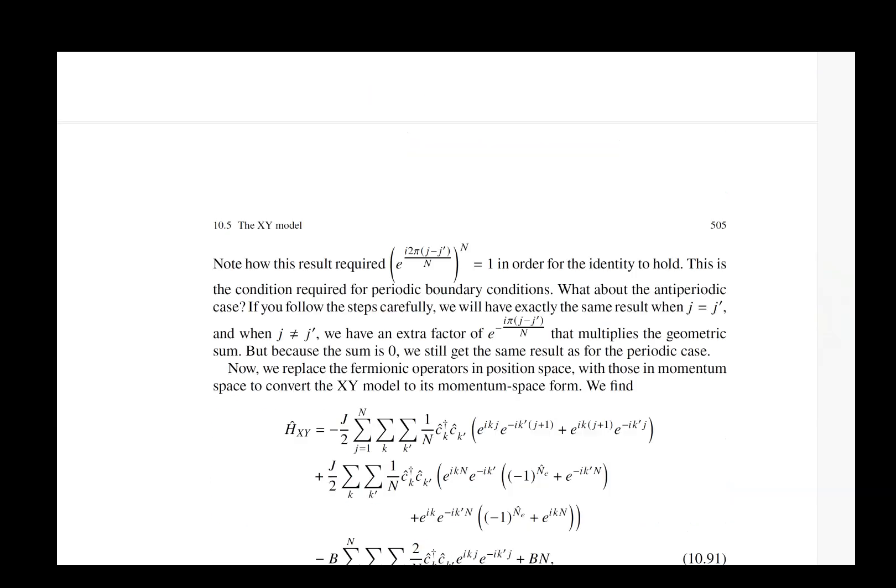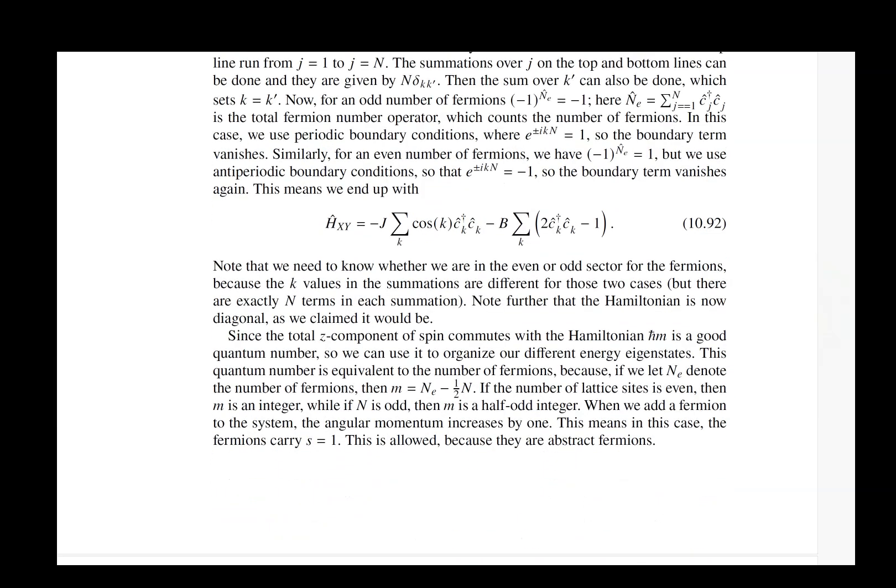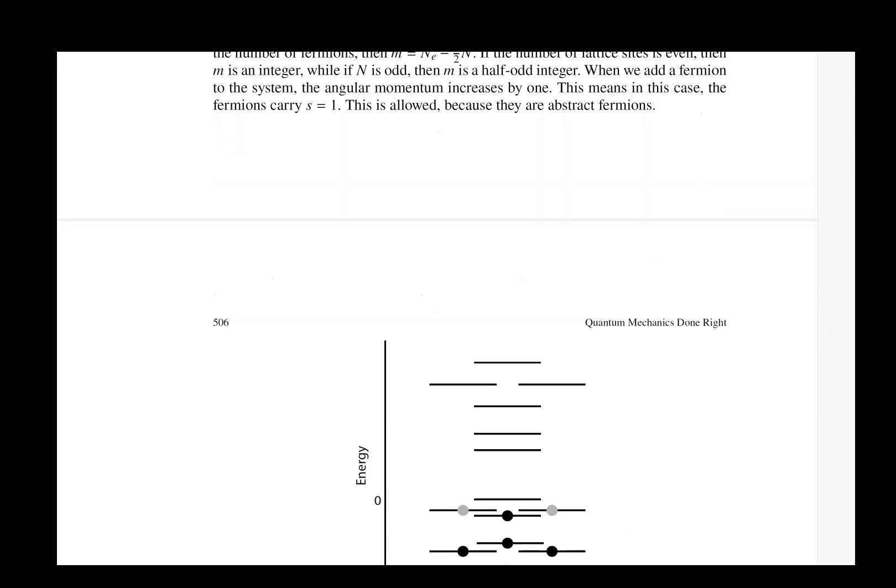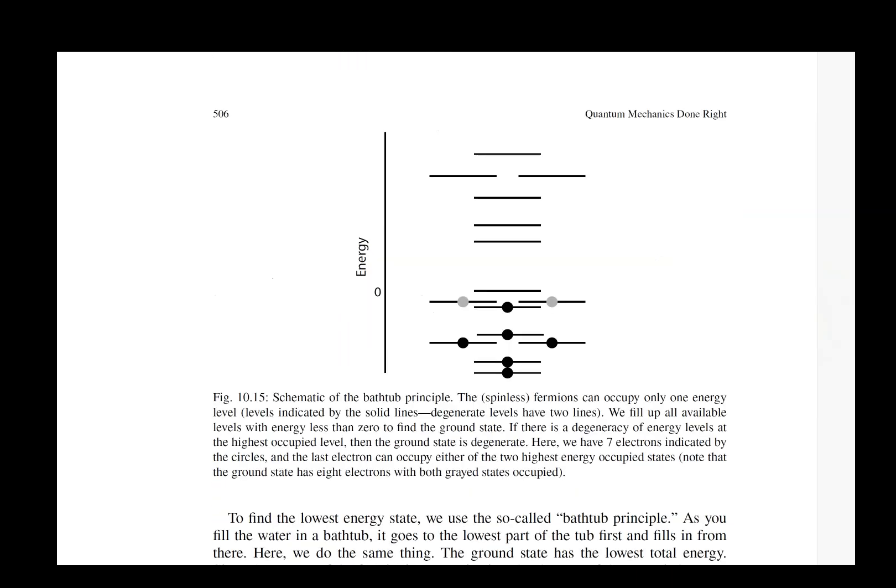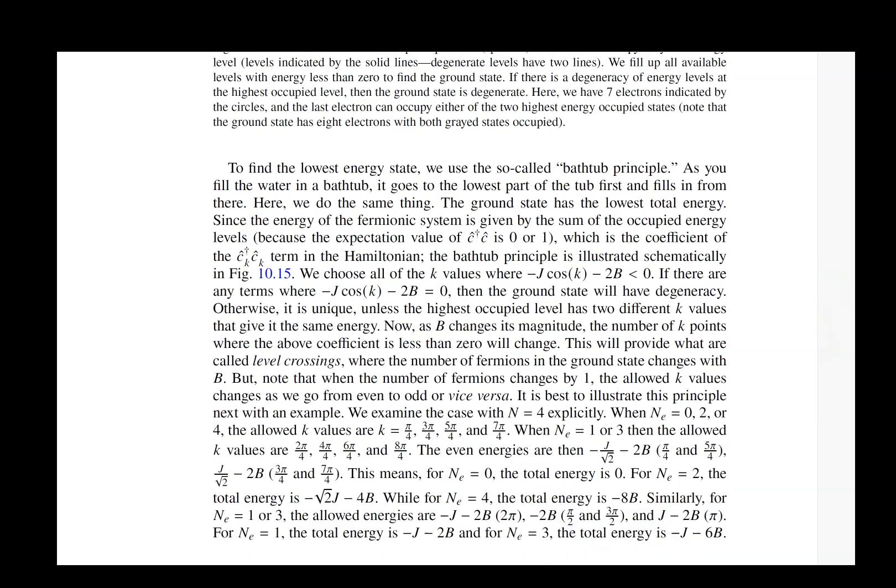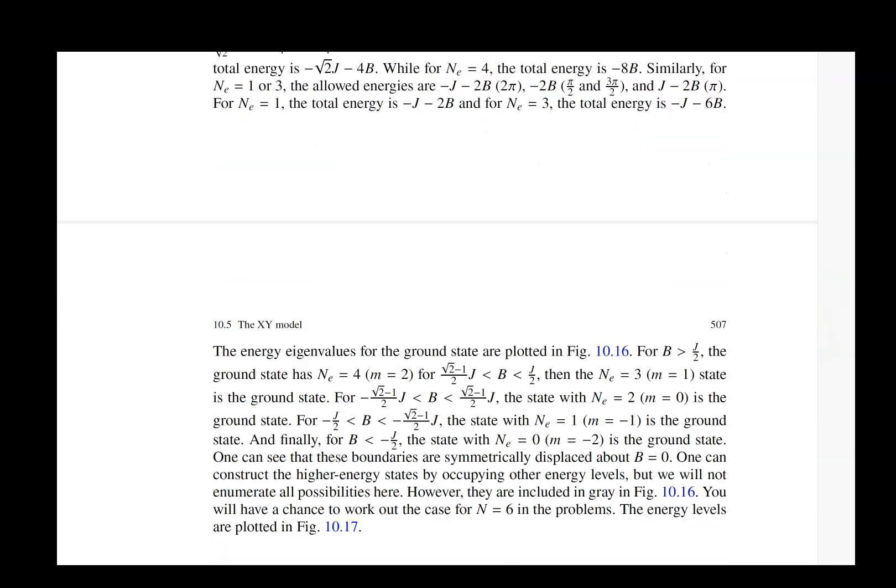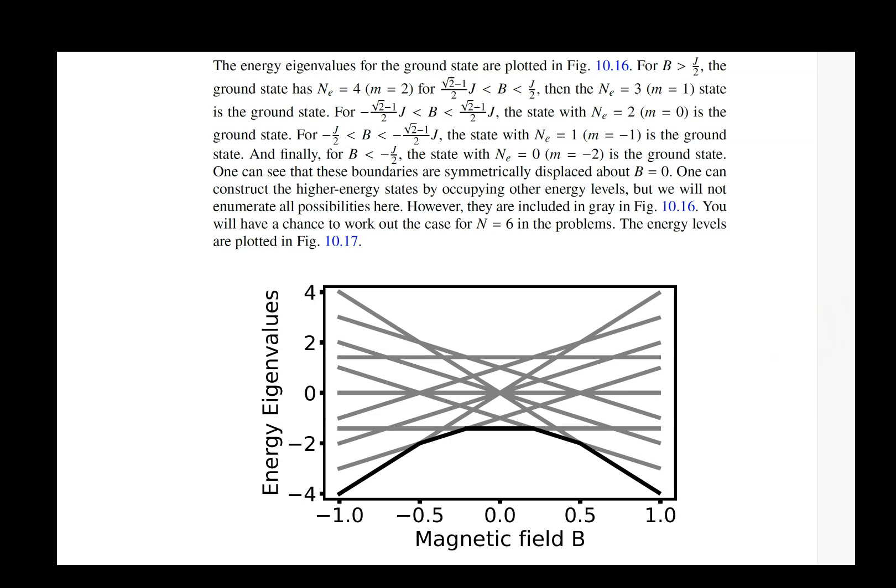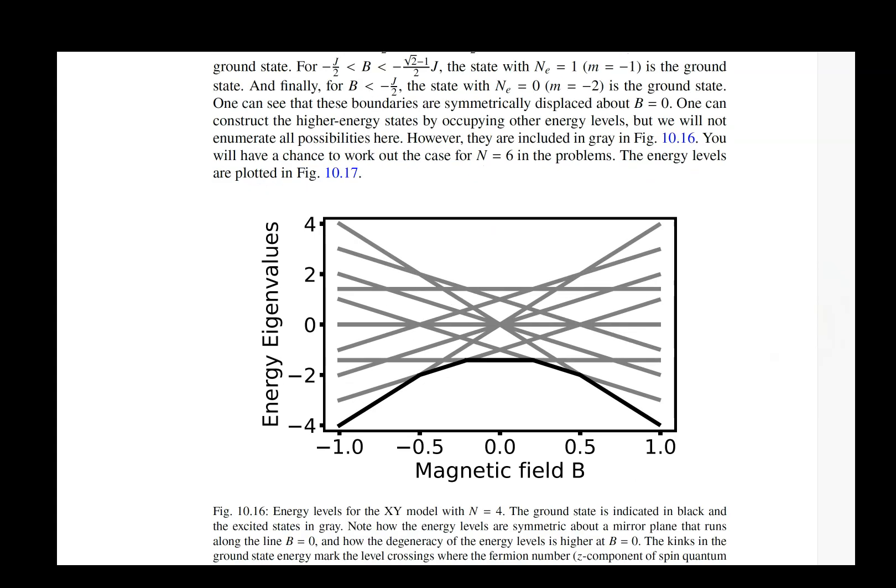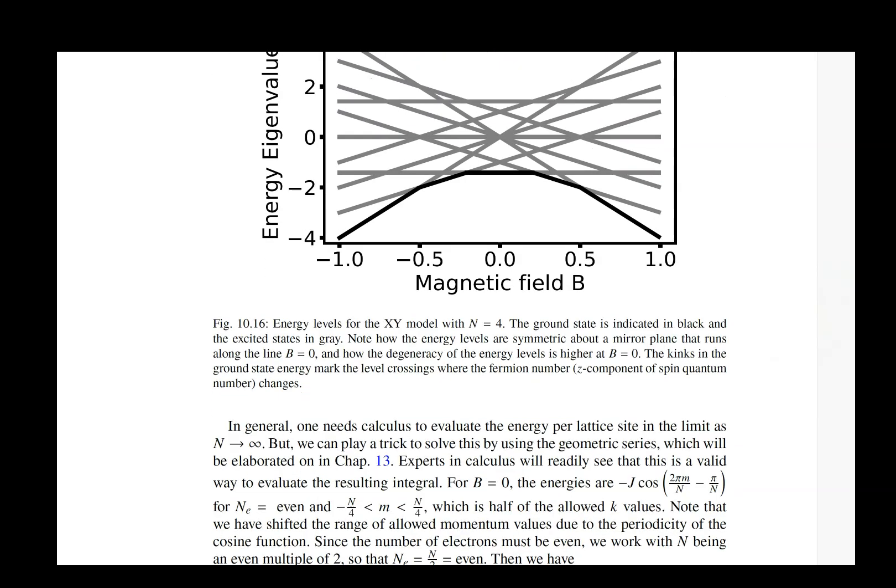Now the dimensions that the spins interact in and the dimensions of the lattice are totally different things. So you can have an XY model in one dimension, two dimensions, three dimensions, just like you can have an Ising model in one dimension, two dimensions, three dimensions. The dimensions I was talking about were the dimensions over which the spin interactions occur. So in an XY model, you'll have terms that involve sigma X at one site with a sigma X on another site and a sigma Y on one site and a sigma Y on another site. Whereas the Ising model would just have it in one dimension, say just the X components.